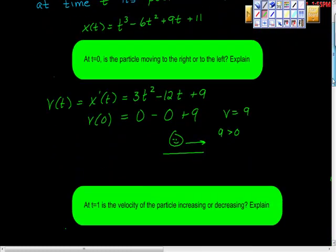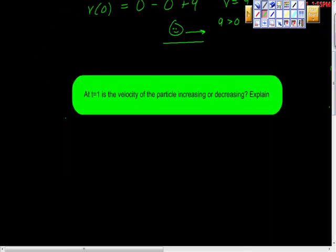What about this question here? The second part is this. It says, at t equals 1, is the velocity of the particle increasing or decreasing? Now what are we talking about? Are we talking about position here? Are we talking about velocity here? Is there some third possibility?